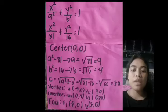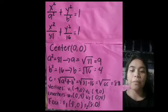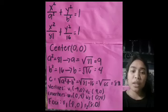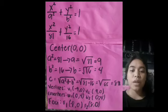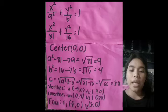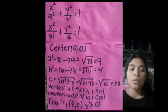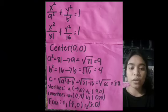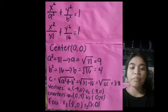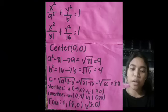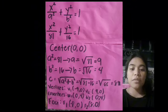To find the value of vertices, co-vertices, and foci, first, how to find the vertices? We need to find a² which is 81, and we need to find the square root of 81 which is 9. So our vertices is (-9, 0) and (9, 0).